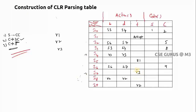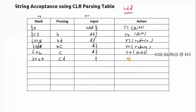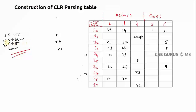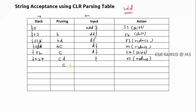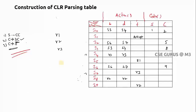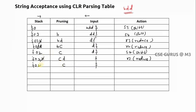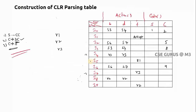Top state is I7 and input symbol is dollar. Check I7 to dollar: R3 — reduction. Third production: C → D. Reduce D to C. One symbol reduced — cross 7. Remaining state is I2; check I2 to C in goto: it is 5. Write 5. Stack now has state 5 with C reduced.